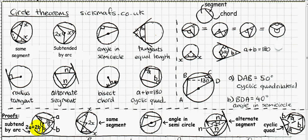Be careful to write it as: 360 minus (180 minus 2A) minus (180 minus 2B). That simplifies to 2A plus 2B. Since the circumference angle is A plus B, the centre angle is exactly twice the circumference angle — and the theorem is proved.